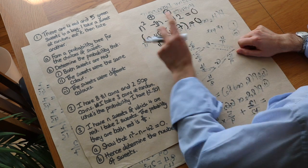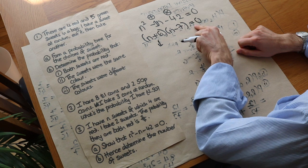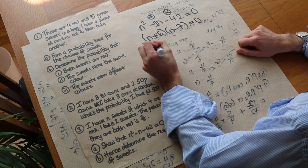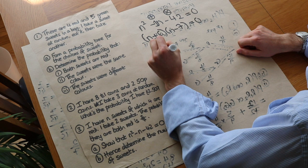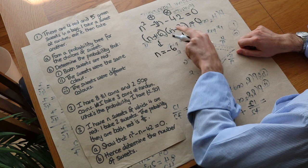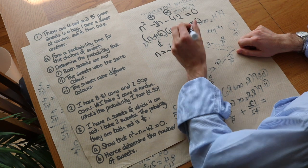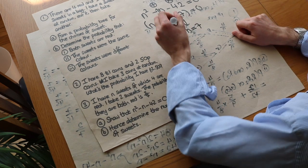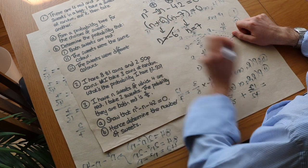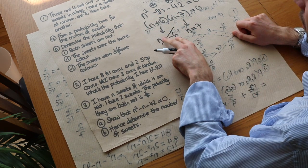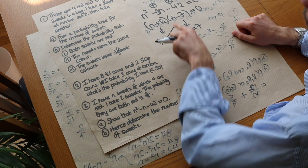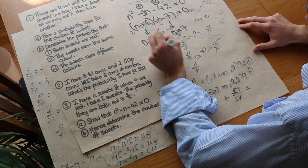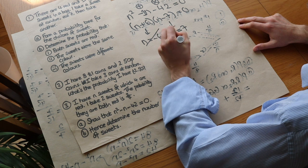So either n + 6 = 0, giving n = −6, or n − 7 = 0, giving n = 7. Since we can't have a negative number of sweets, we discard n = −6. Therefore there are seven sweets.